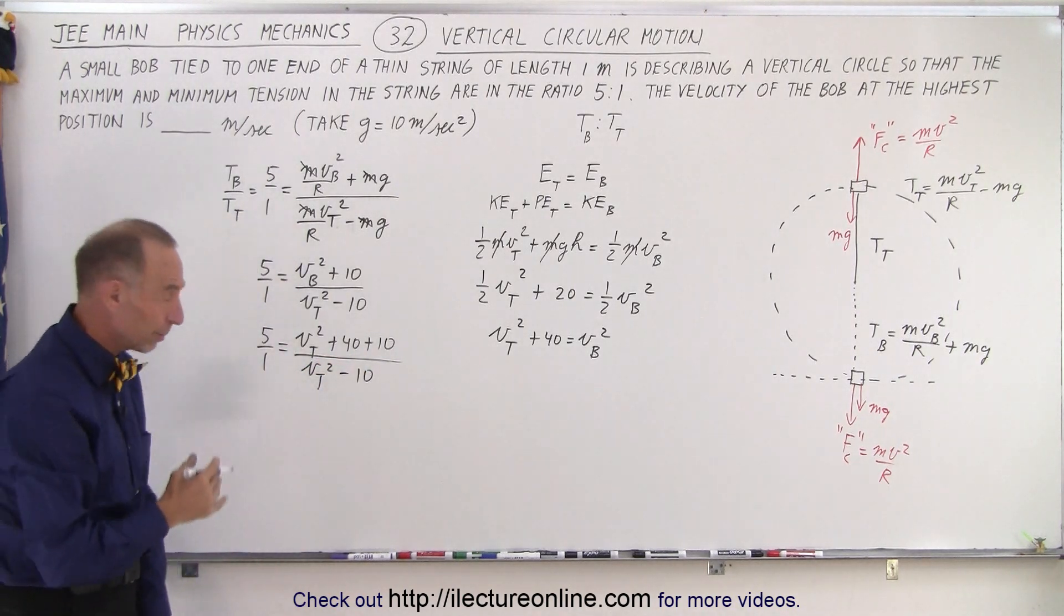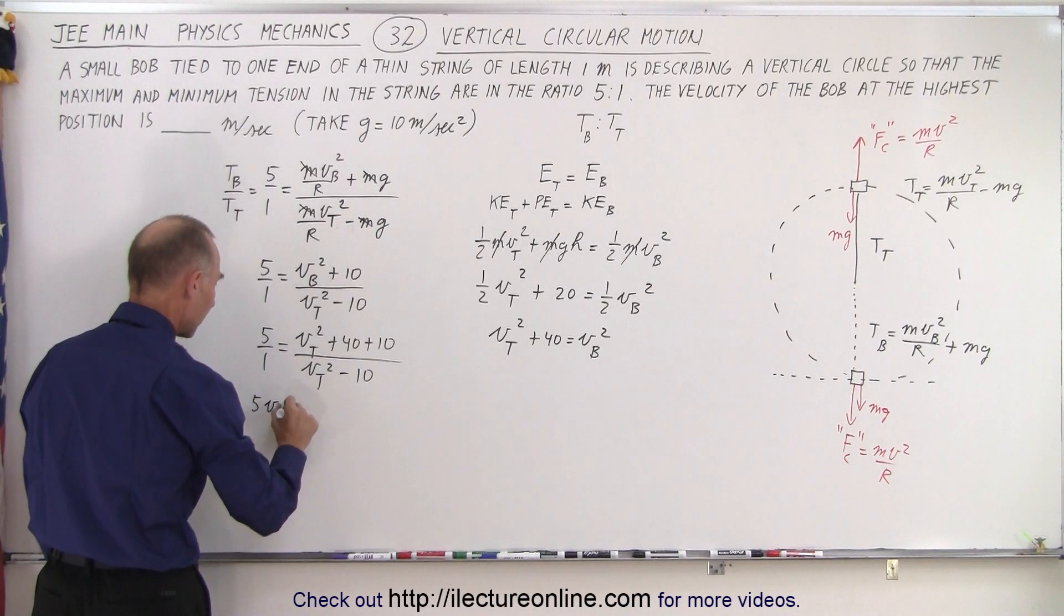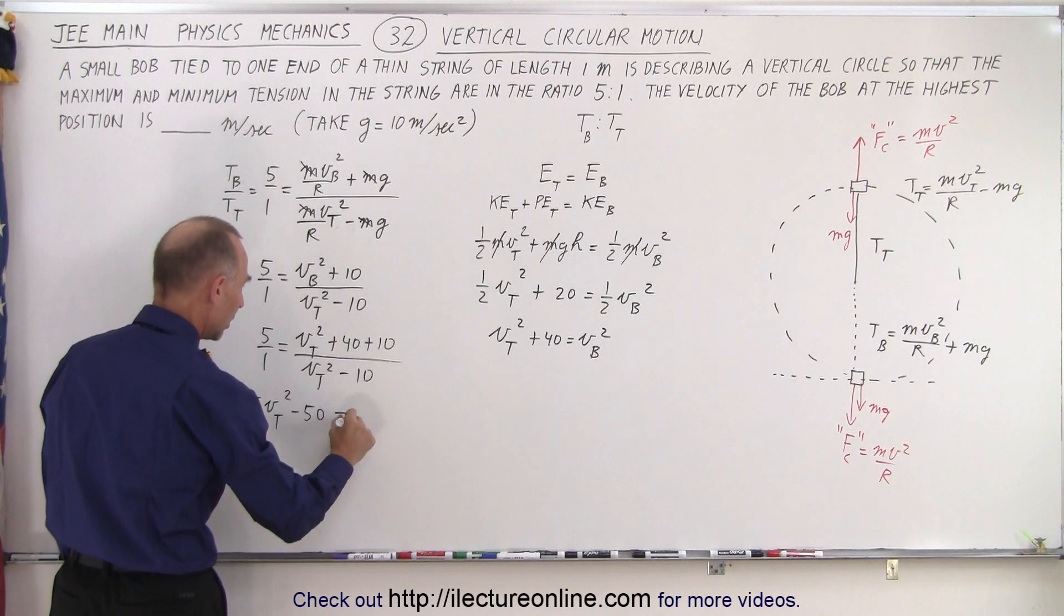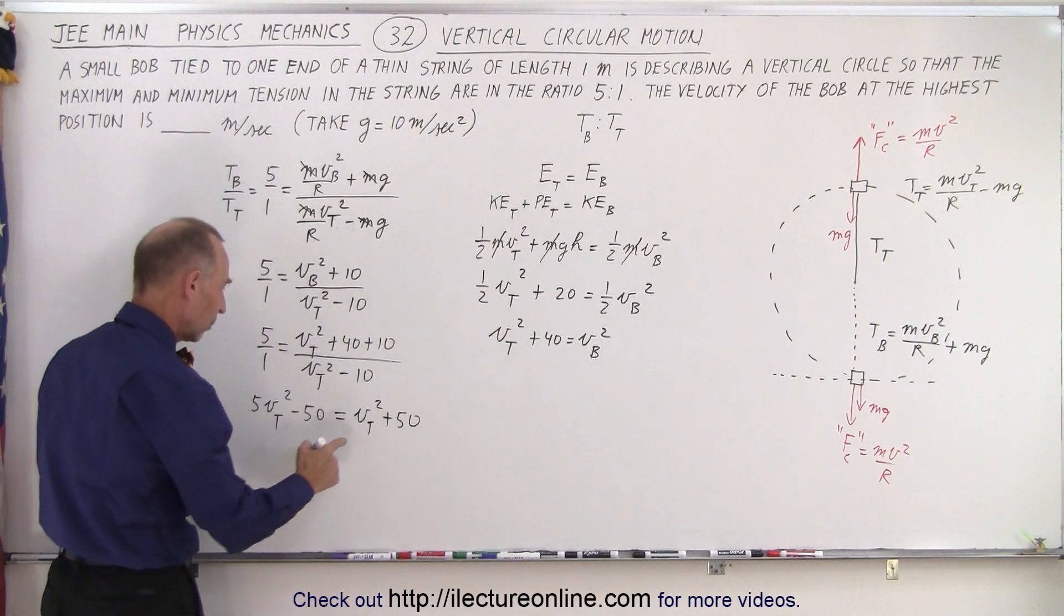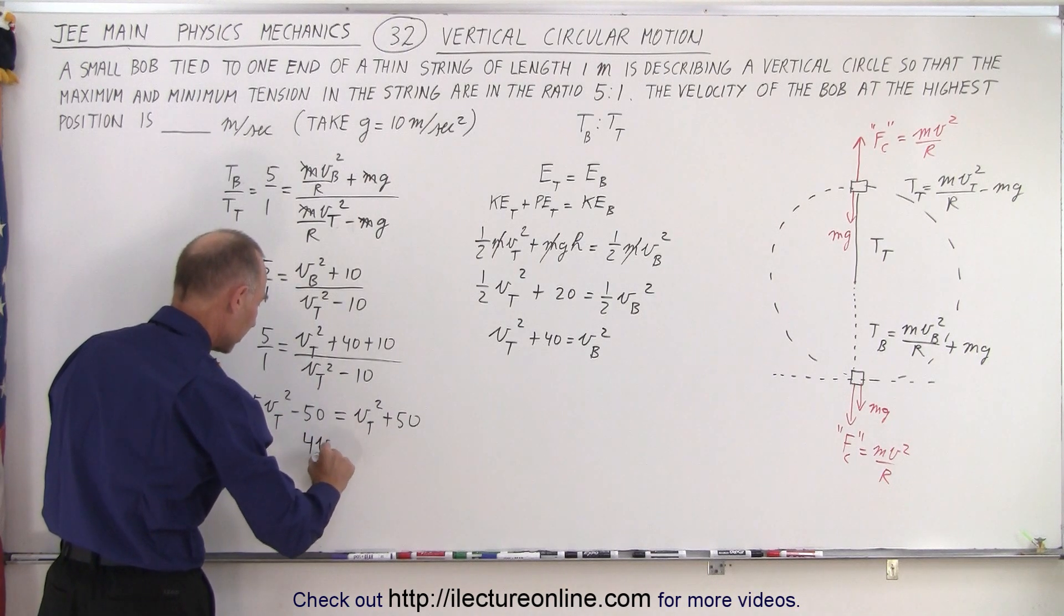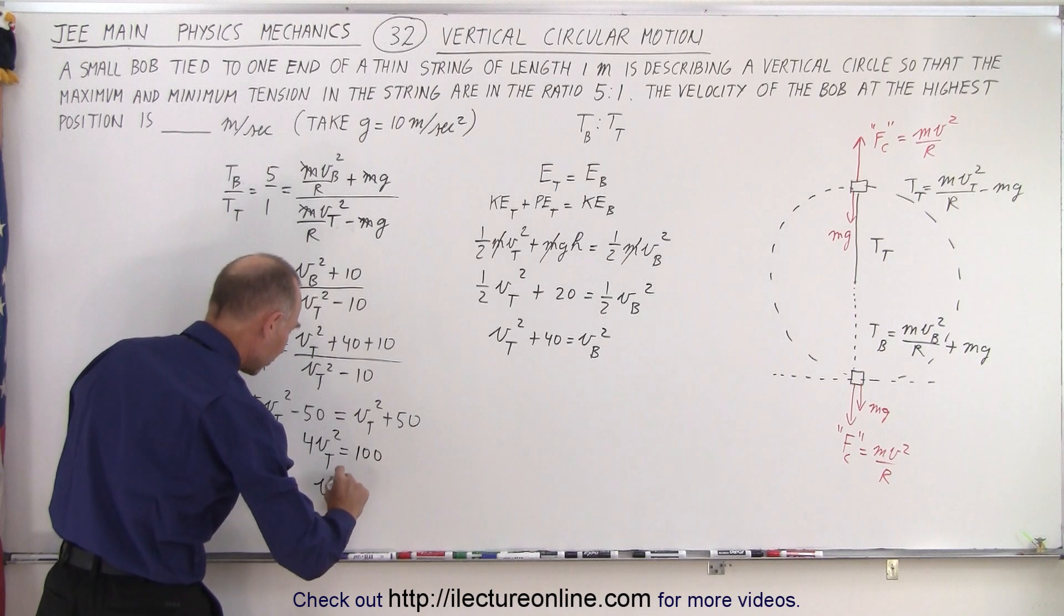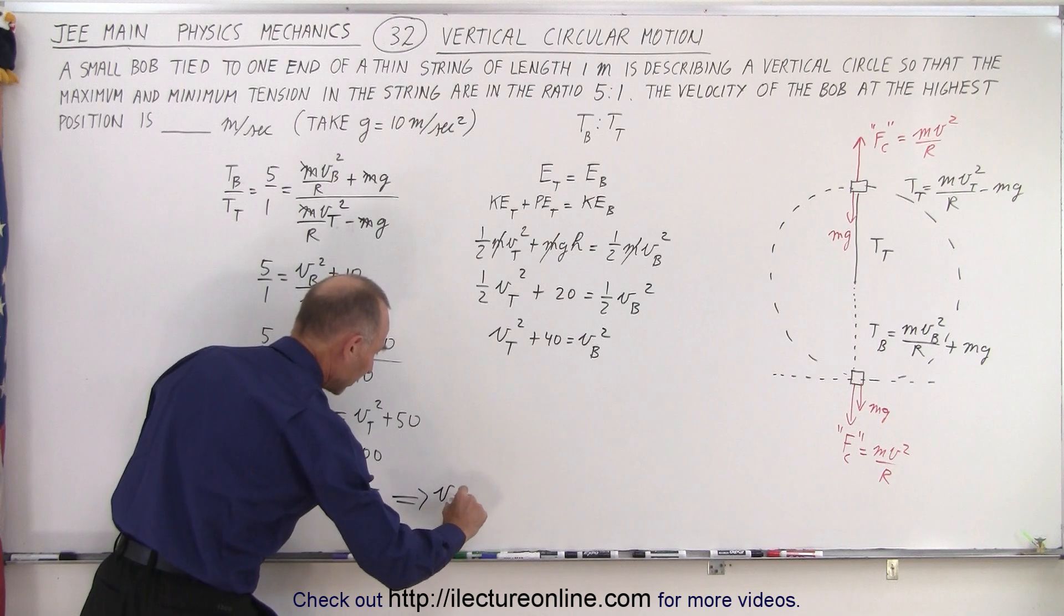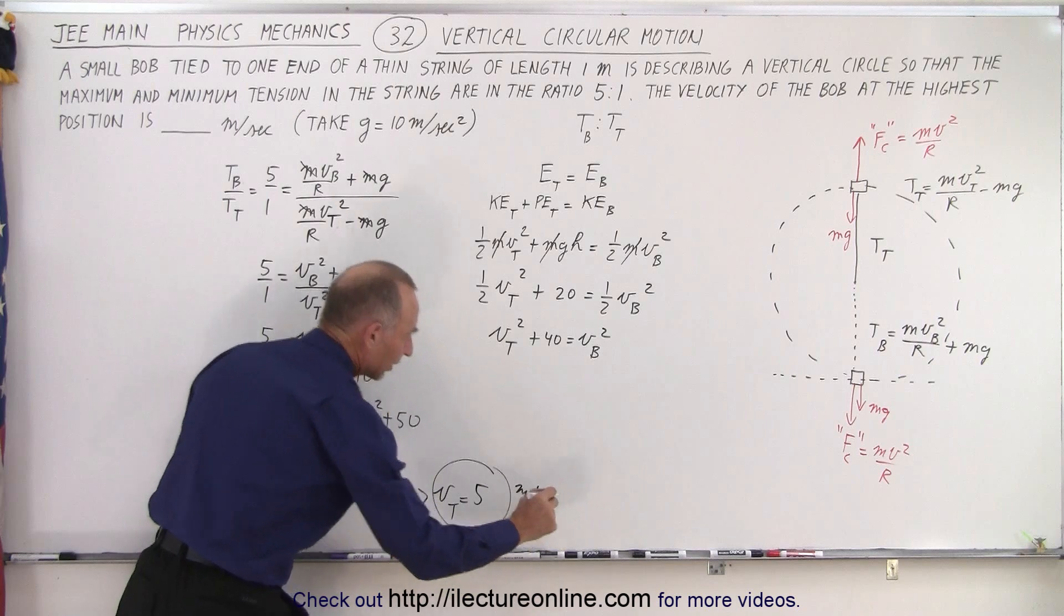And now we can cross multiply and solve for v top. So now when we cross multiply we have 5 v top squared minus 50 equals v top squared plus 50. So we bring this over here and over there. Now we have 5 minus 1 or 4 v top squared is equal to 100. Or v top squared is equal to 25. Which finally means that v top is equal to the square root of 25 or 5 meters per second. And that's the answer.